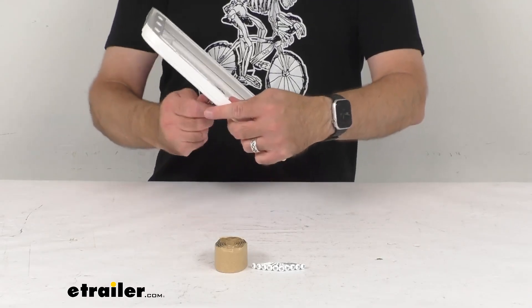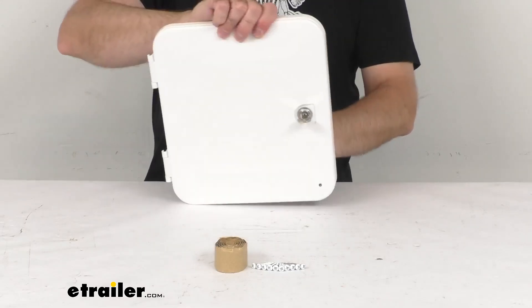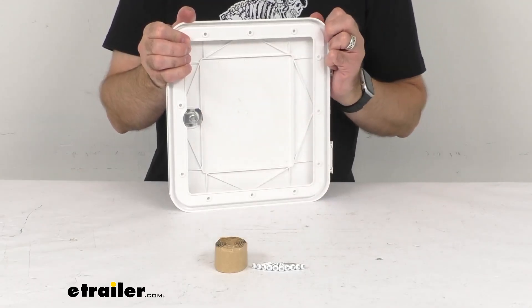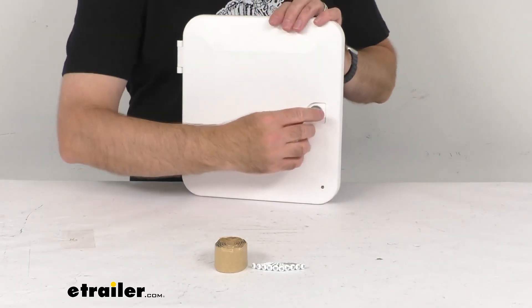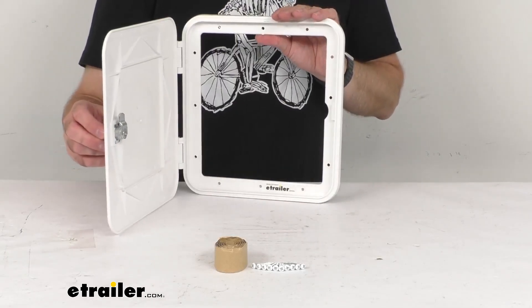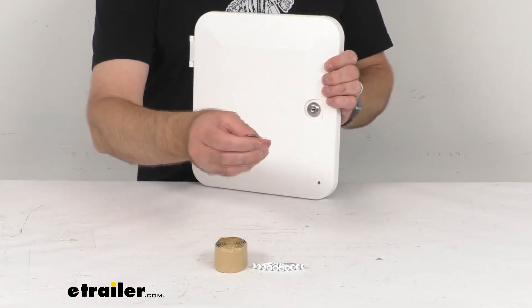So as you can see that's locked and you can see the latch in there. And then to unlock it I'm just going to turn this and that's going to allow me to open up that door. So very simple, it does include a key.